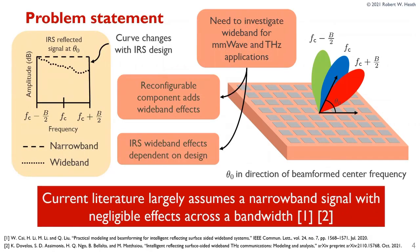Much of the current literature for Intelligent Reflecting Surfaces assumes a narrowband signal that neglects bandwidth effects. This is fine for many applications; however, with the push towards millimeter wave and terahertz, there is a new need to look into wideband effects for IRSs. Two motivating factors include the reconfigurable component adding certain wideband effects, and these effects being dependent on the design — both the reconfigurable component and the actual unit cell geometry. For a narrowband case, we would assume an IRS to be frequency flat, but for a wideband scenario it may look more like a sporadic dotted curve that is difficult to model.